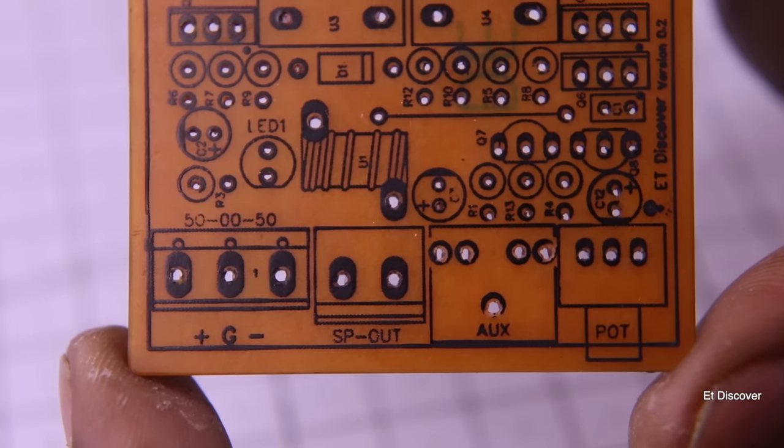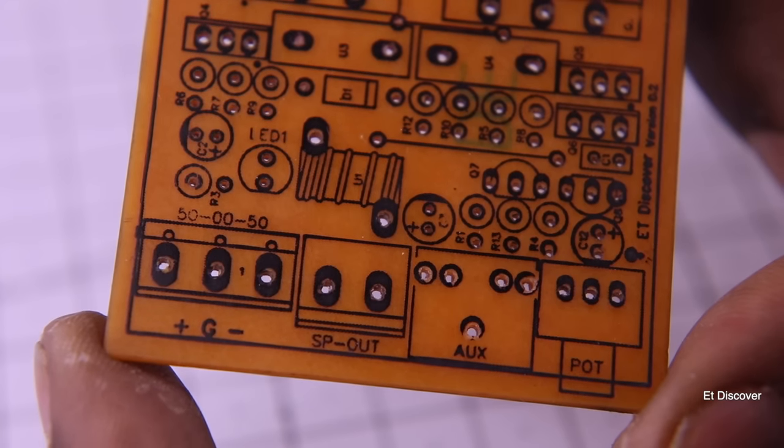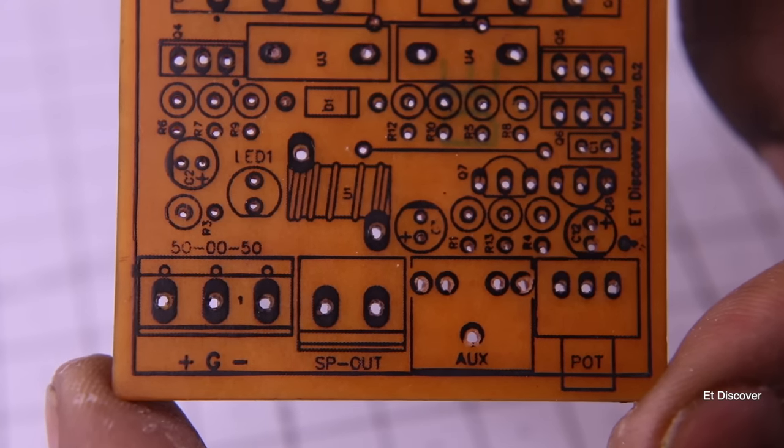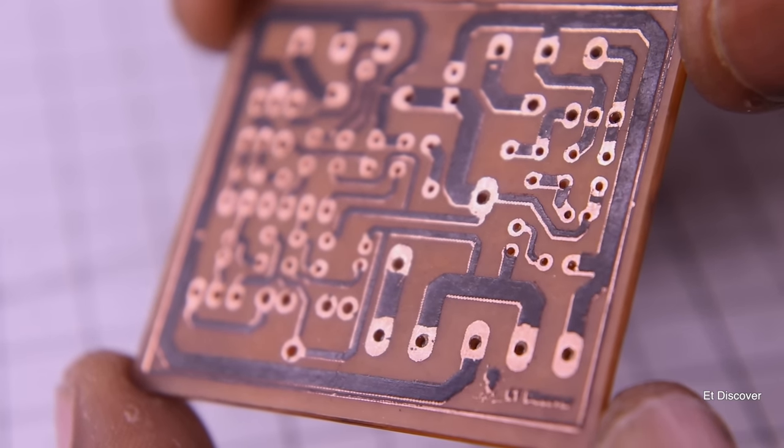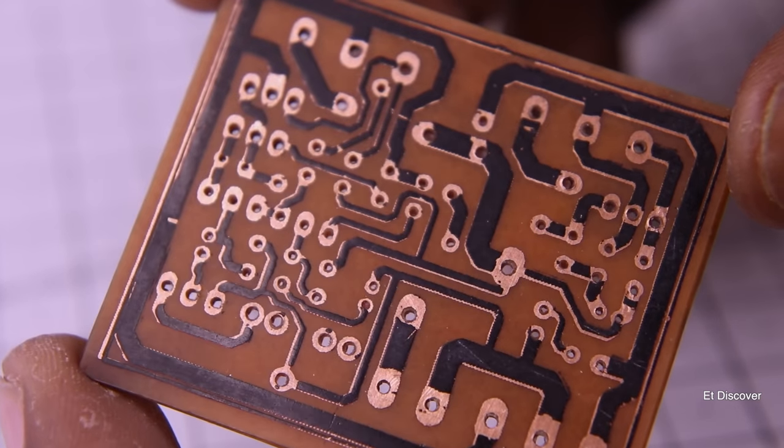I think this process of making PCB is advanced enough to make at home, at least for me. This is a 200W amplifier board which is very easy to make and also small in size. Wait for the next video to see how well it works.